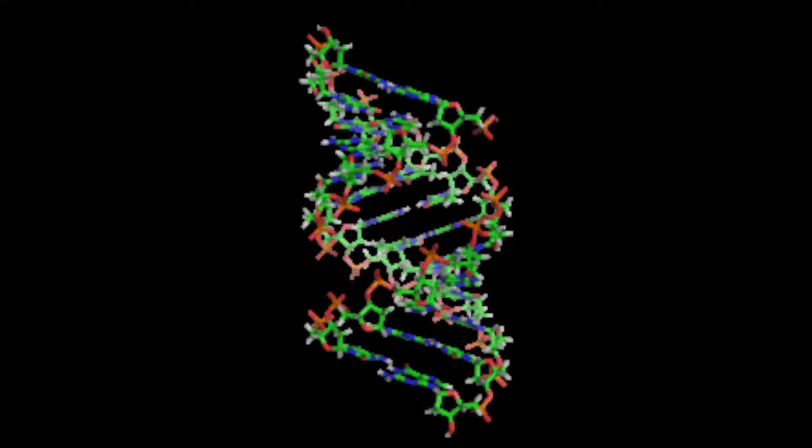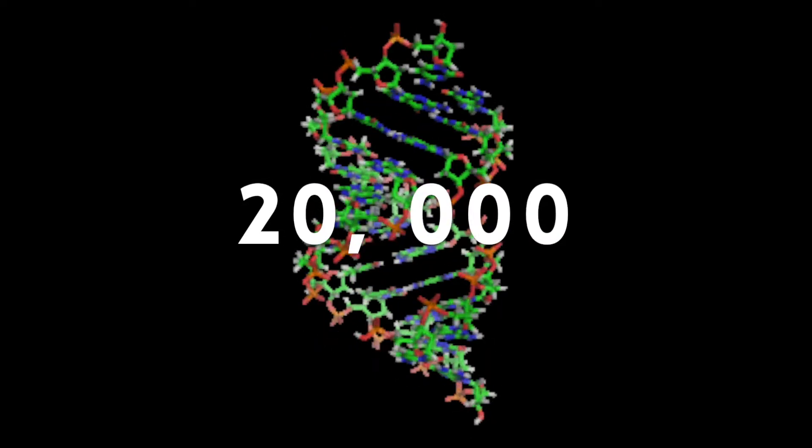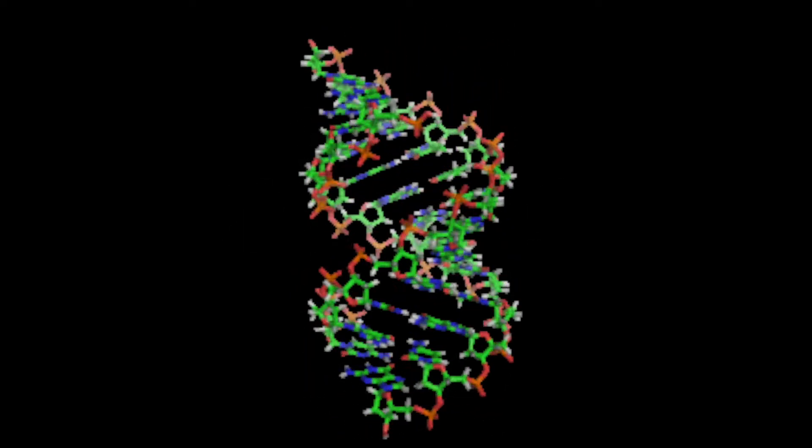Guess how many genes make up your body and its code? 20,000! Half are from your dad and half are from your mom.